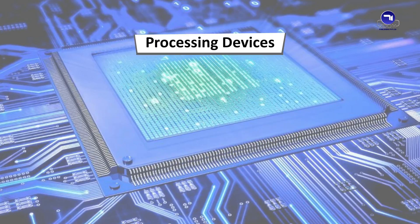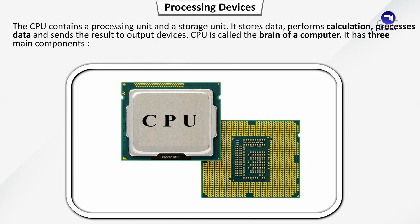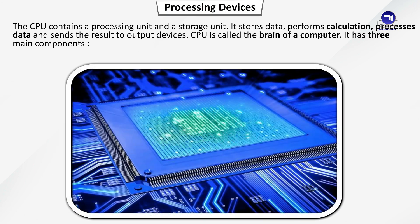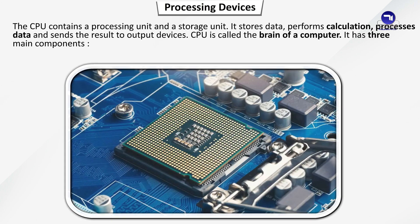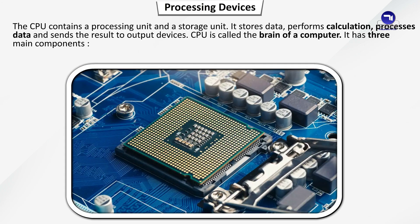Processing Devices: The CPU contains a processing unit and a storage unit. It stores data, performs calculations, processes data and sends the result to output devices. CPU is called the brain of a computer.